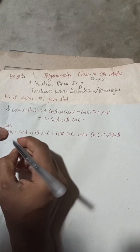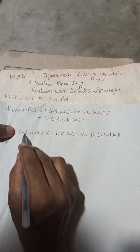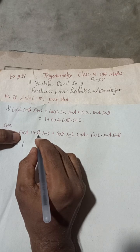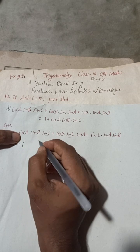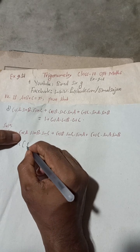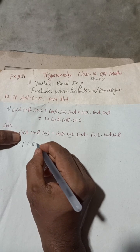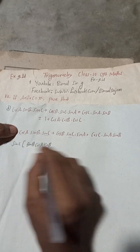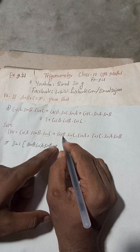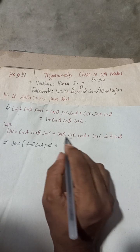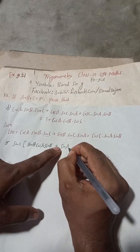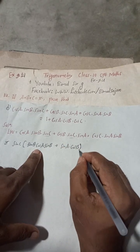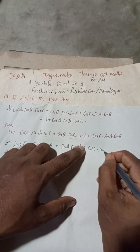For LHS, this is simple. You can see that sin C appears in the first two terms, so take sin C as common. After taking sin C common, the remaining terms are cos A·sin B. Then write sin B, and now the third term has cos C. After factoring, the sequence is sin A·cos B plus cos A·sin B inside the bracket, and then the remaining cos C·sin A·sin B term.